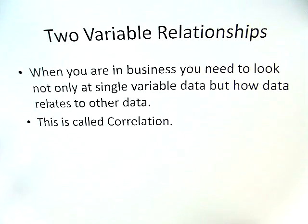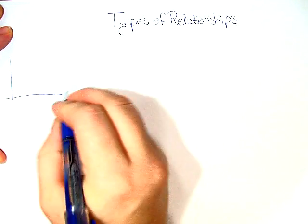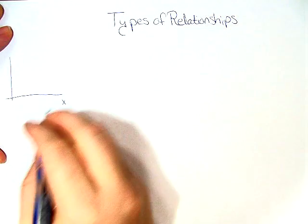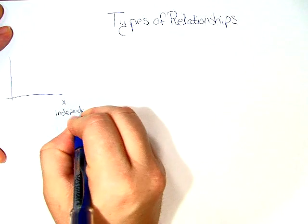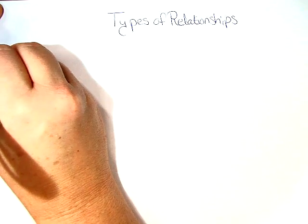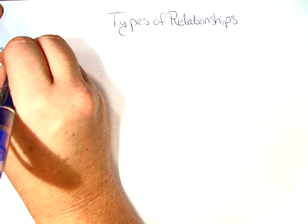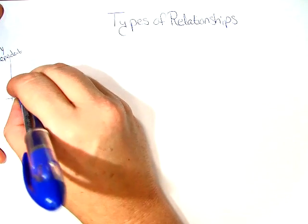In this course, we're going to be learning about the four different types of relationships. Now, the first type of relationship looks something like this. You have x, which is your independent axis, and y, which is your dependent. When you deal with this, you're going to have a scatter plot.